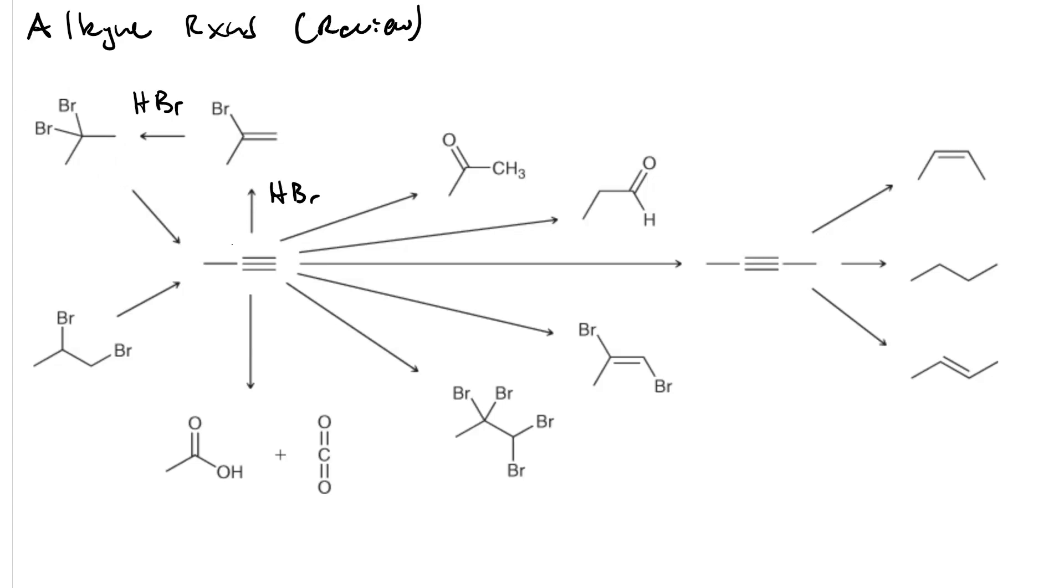To go direct from the alkyne to the geminal dihalide, we just go excess HBr.